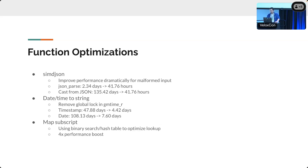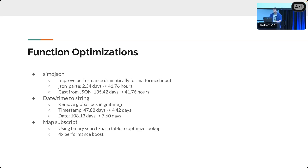There are other small function optimizations, each covering a small number of queries but giving huge improvements. One is simdjson: previously we used the Folly JSON library which forced exception throwing on malformed input, and throwing exceptions on each row is disastrous. With simdjson, we get a return code instead of an exception, which is blazing fast. For malformed input, the improvement is gigantic.